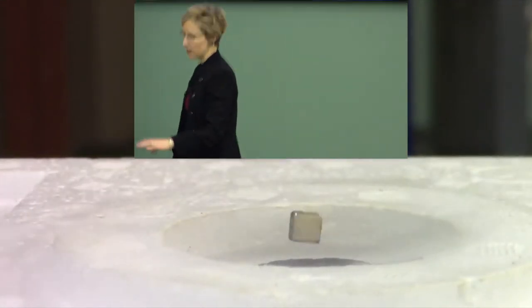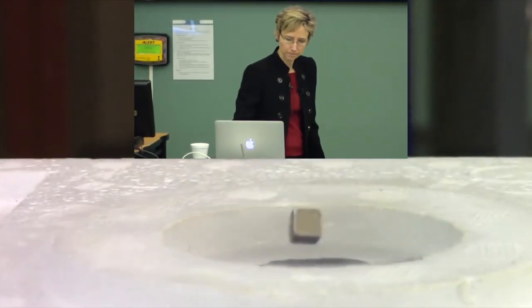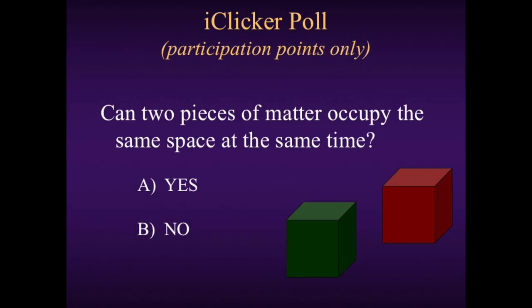So how does a superconductor run currents without losing any energy? This brings us to a clicker poll — participation points only. The poll is: can two pieces of matter occupy the same space at the same time? No right or wrong answer, just a poll.